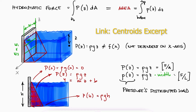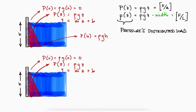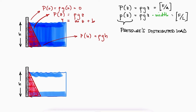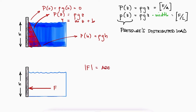A link below points to that specific section of the previous video on distributed loads. And just like any triangular load, the location of the equivalent point load with that magnitude is the centroid of the triangle — one third from the base.